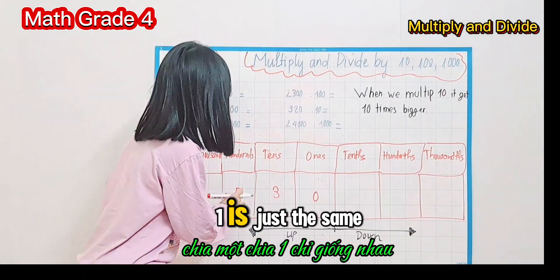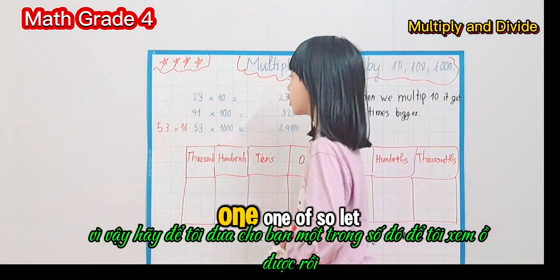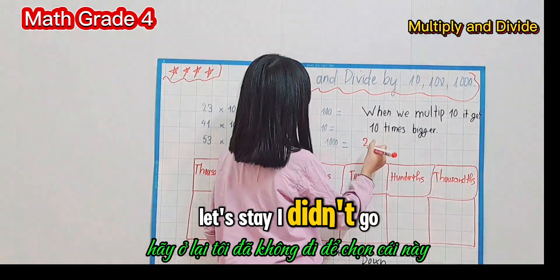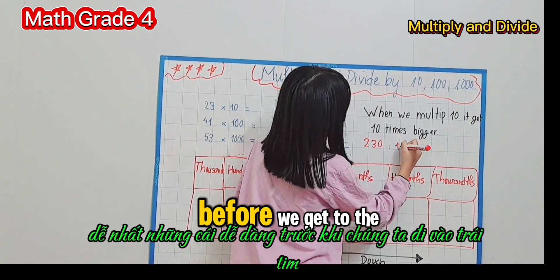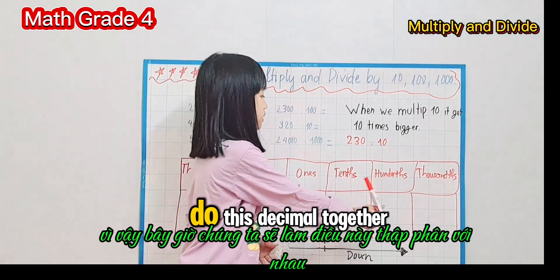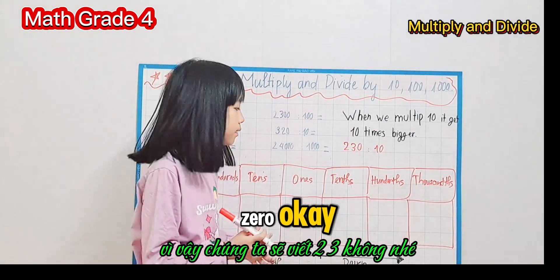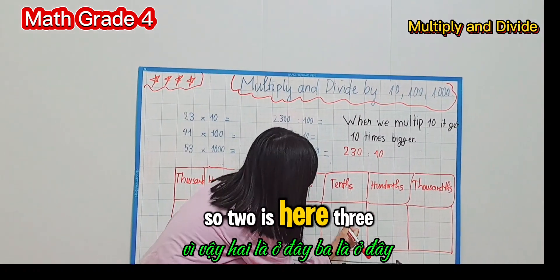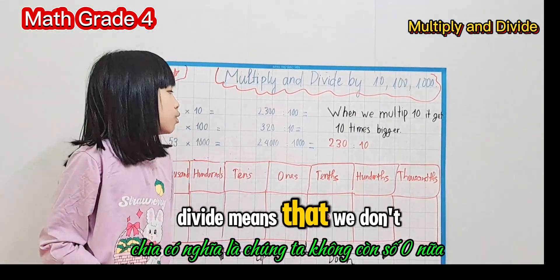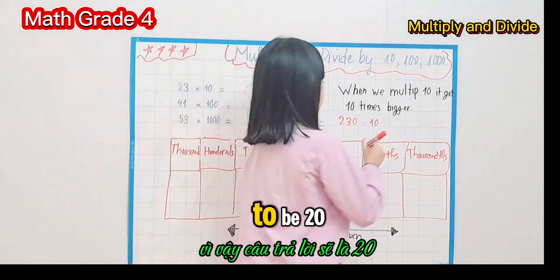Now let's try a dividing one. Dividing is just the same but we move in the other direction. So let's take the number 230. Two is here, three is here, zero is here. When we divide by 10, we erase one zero, so the answer is going to be 23.